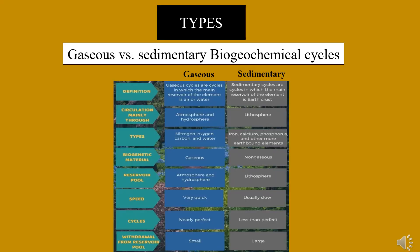From the viewpoint of the biosphere as a whole, biogeochemical cycles fall into two basic groups. First, gaseous cycles, where the reservoir is the atmosphere or hydrosphere — these include cycles of nitrogen, oxygen, carbon, and water. Second, sedimentary cycles, where the reservoir is the earth's crust — these include cycles of iron, calcium, phosphorus, and other earth-bound elements. Both involve biotic and abiotic agents, are driven by the flow of energy, and are tied to the water cycle. Gaseous cycles tend to move more rapidly than sedimentary ones.